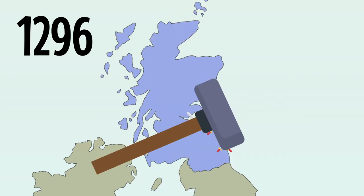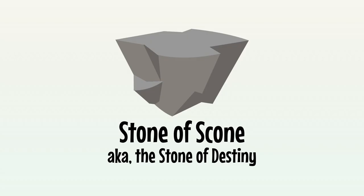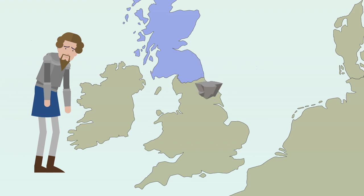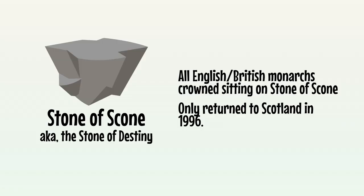For 400 years, Scottish kings had been crowned sitting on the mystical Stone of Scone. Edward stripped Balliol of his kingly regalia and stripped Scotland of its stone. No longer would Scottish kings be crowned sitting on the Stone of Destiny. Instead, Edward had it hauled off to London and placed under the coronation throne in Westminster Abbey. From now on, only English kings would be crowned sitting on top of it. The stone would remain there for 700 years, only being taken back to Scotland in 1996.